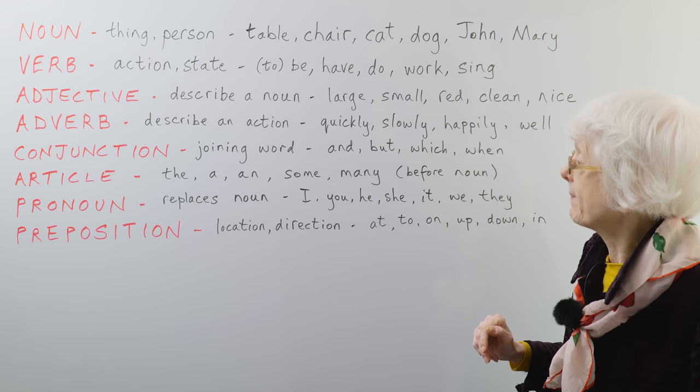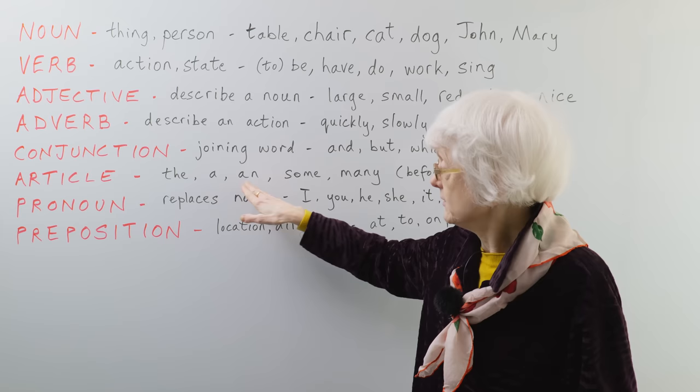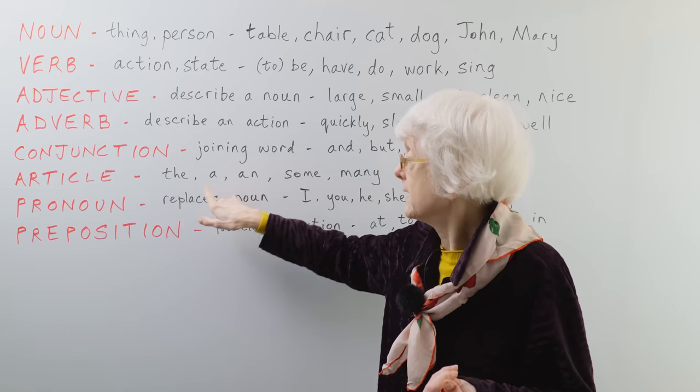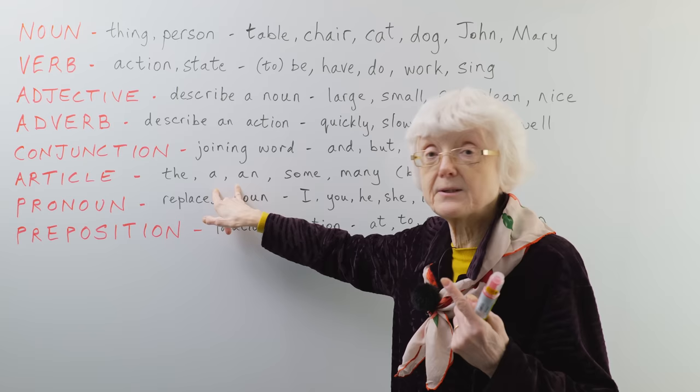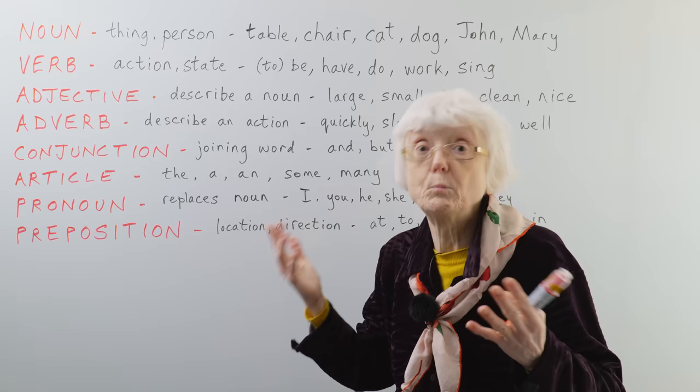And then the next one is the article. Usually it's either the or a or an. The is called the definite article, and a or an is the indefinite article, because the is a specific one that you're pointing to, and a is just maybe one of many possible ones. More general. Those are called articles.